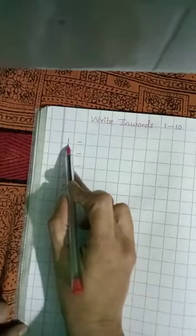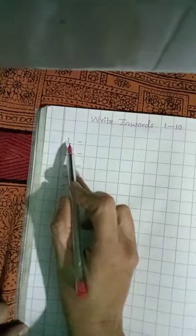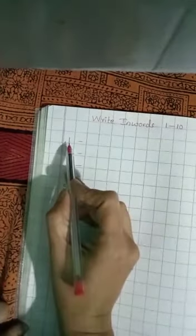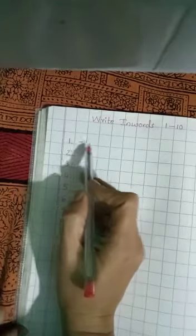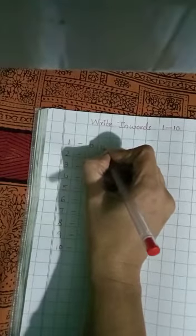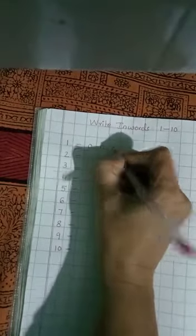Which number is this? You have to identify the given number and you have to write the inverse. First one is 1. You have to write the spelling of 1. O N E 1.